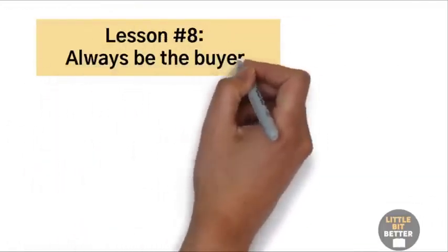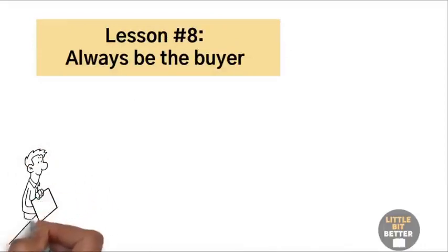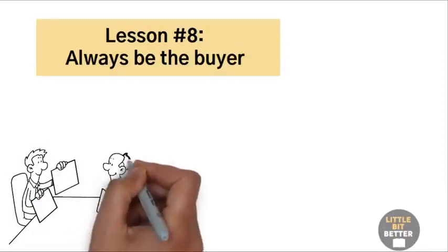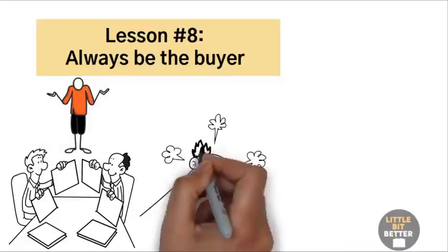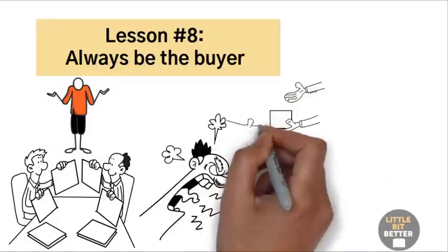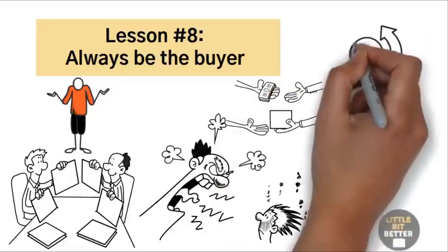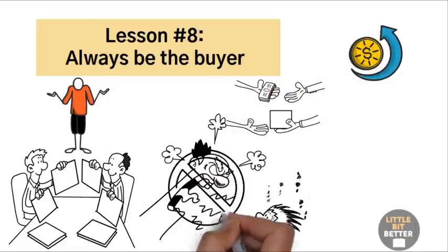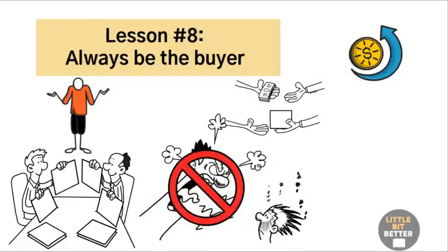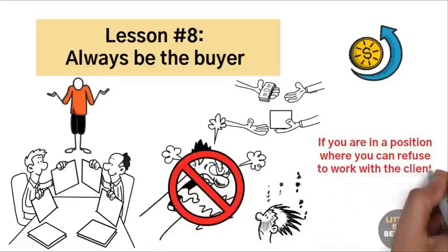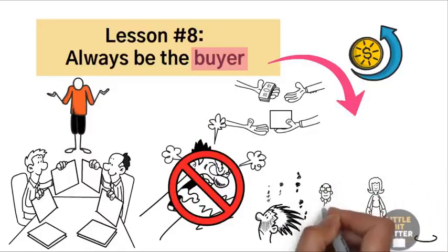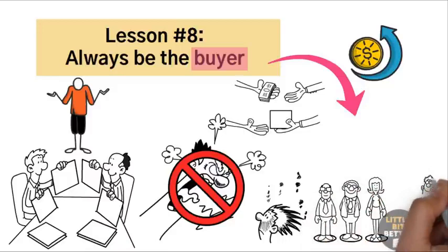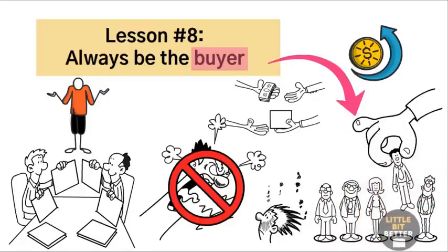Lesson number eight, always be the buyer. Imagine you are negotiating with a potential client. After a little bit of discussion, you realize that this can be a very profitable deal for your business. However, you don't like the way the client is behaving. He's very rude to you and to your employees, and he keeps making more and more demands. Pretty quickly, you realize that despite the profit, it will be very tough to deal with this client. Now, if you are in a position where you can refuse to work with the client, then you are a buyer. Being a buyer means you get to choose people you work with, not the other way around. In every situation, the buyer can reject the seller, but not the other way around. Being a buyer means you can reject people who are not aligned with your principles and values.